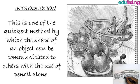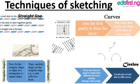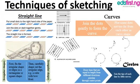This is one of the quickest methods by which the shape of an object can be communicated to others with the use of a pencil — through freehand sketching and scaling in technical drawing. So you can represent technical drawing with freehand sketching.